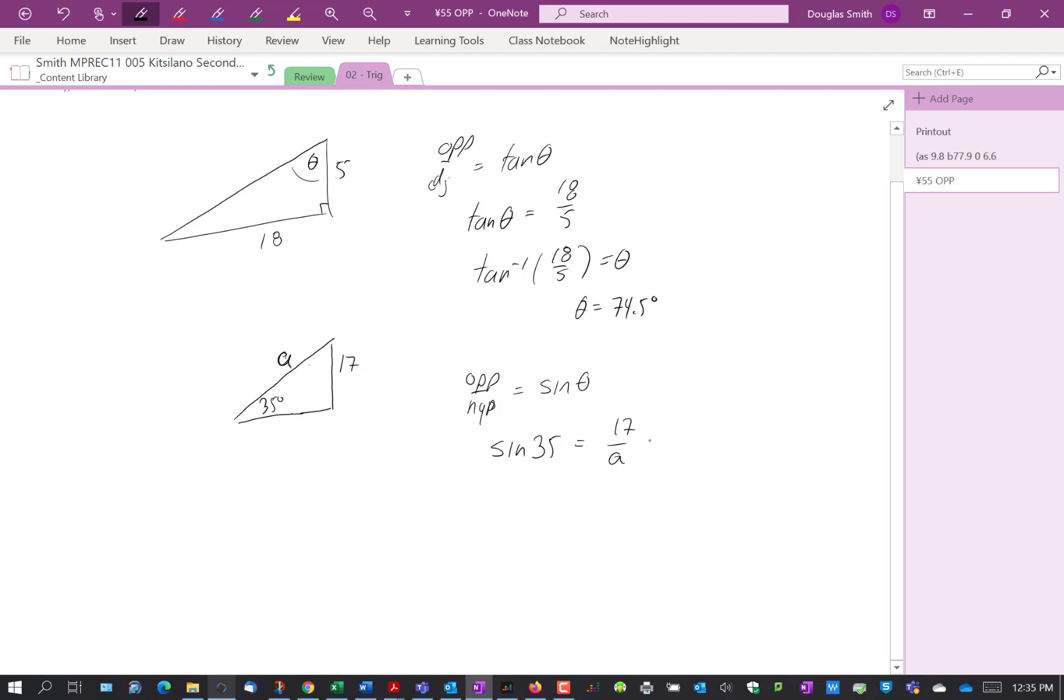And we're looking to solve for A, so we can multiply both sides by A. Divide both sides by sine 35, actually I'll do it in two steps, just to make sure people kind of understand what's going on here. Those cancel out.